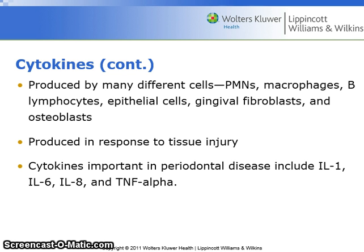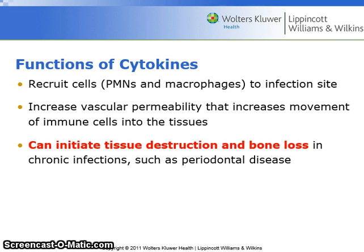Cytokines important in periodontal disease include IL-1, IL-6, IL-8, and TNF-alpha. Cytokines recruit cells to the infection site. They increase vascular permeability, which increases movement of the immune cells into the tissues. They can initiate tissue destruction and bone loss in chronic infections such as periodontal disease.